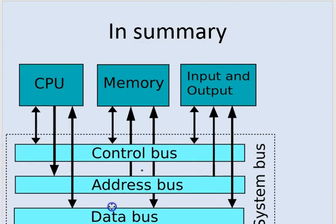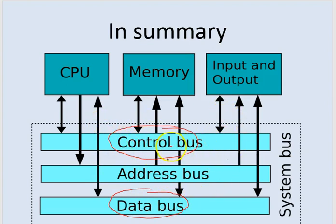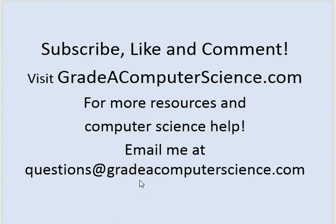In summary, we looked at the data bus and the control bus. The data bus is used to send information and is a bi-directional bus. The control bus is also bi-directional, and we looked at the features of these buses and what they actually do. I hope you liked that video — please subscribe, like, and leave a comment, or visit gradacomputerscience.com for lots of other videos and resources to help you pass your computer science class. This is Colin Baptiste from Grade A Computer Science.